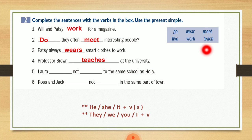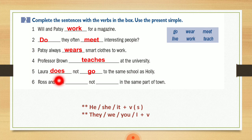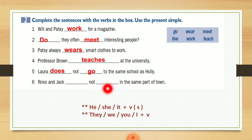Number five: Laura not to the same school as Holly. رح تكون هون عندي: Laura does not go to the same school as Holly. ما ننسى إنه بحالة النفي والسؤال نستخدم does أو do — هون لأنه كان في نفي شفته من كلمة not فرح أستخدم does لأنه الـ subject عندي Laura. Number six: Ross and Jack برضو هون عندي نفي not in the same part of the town. بس الـ subject كان Ross and Jack فبدل ما أستخدم does رح أستخدم do: They do not live in the same part of the town.